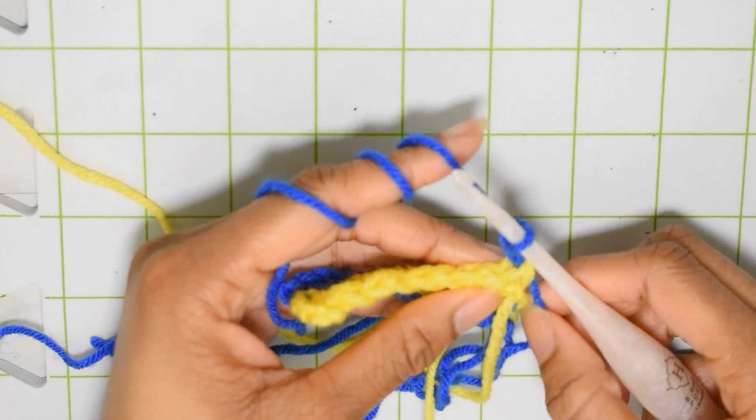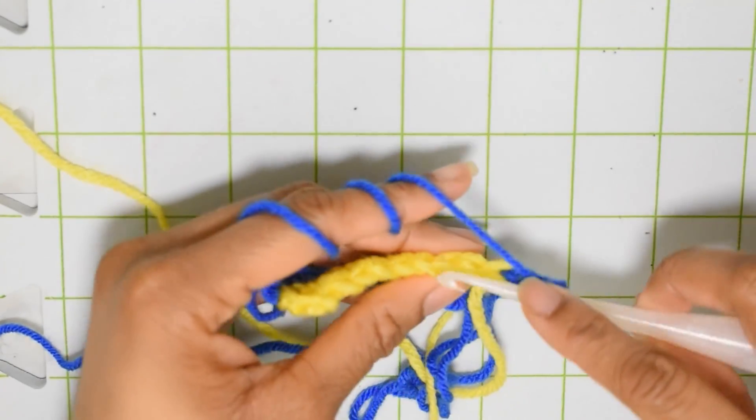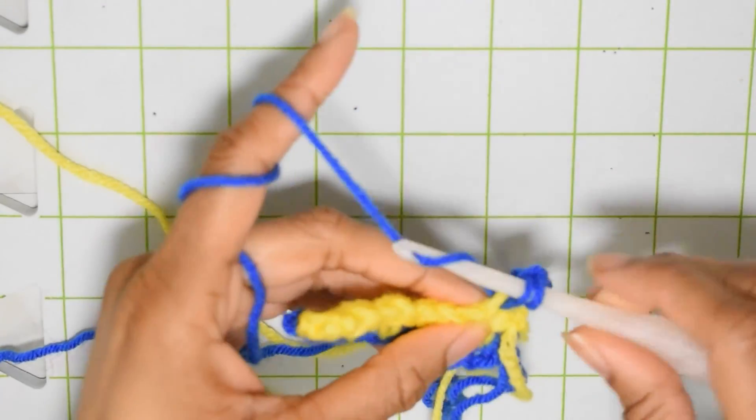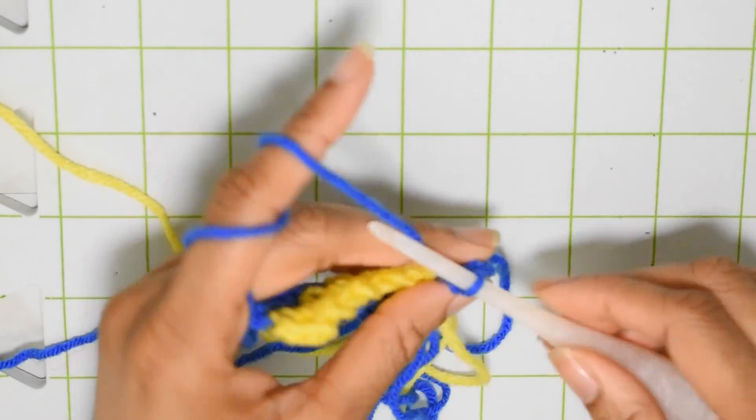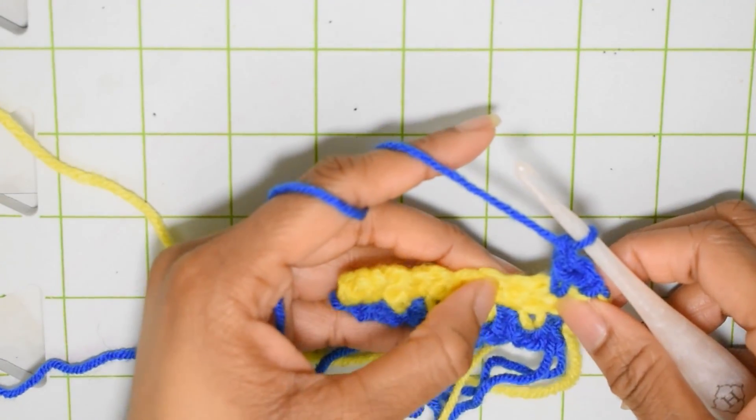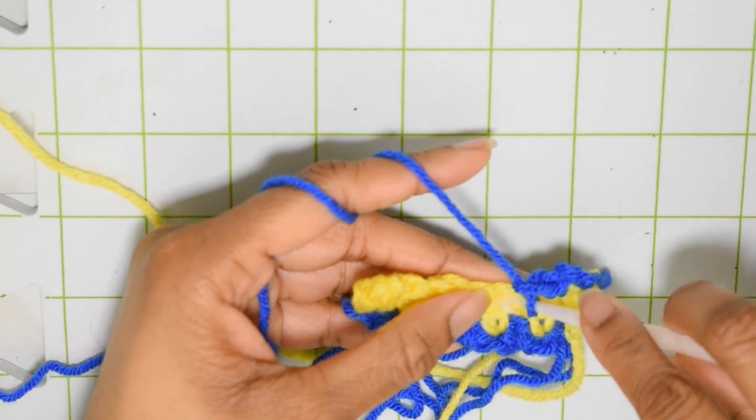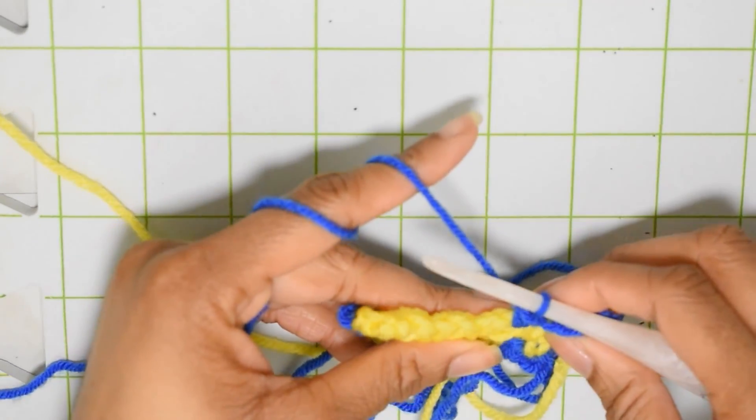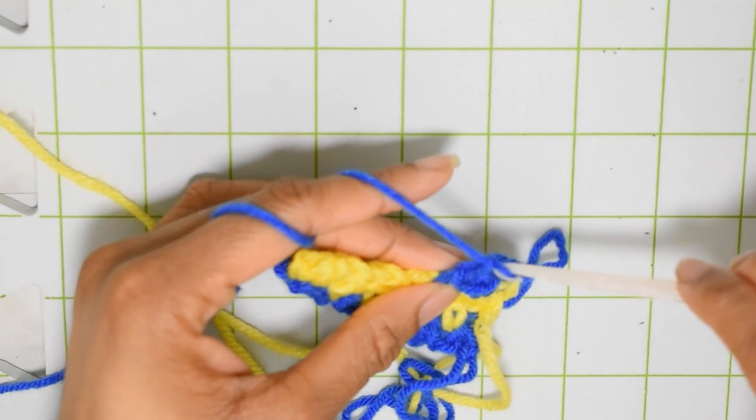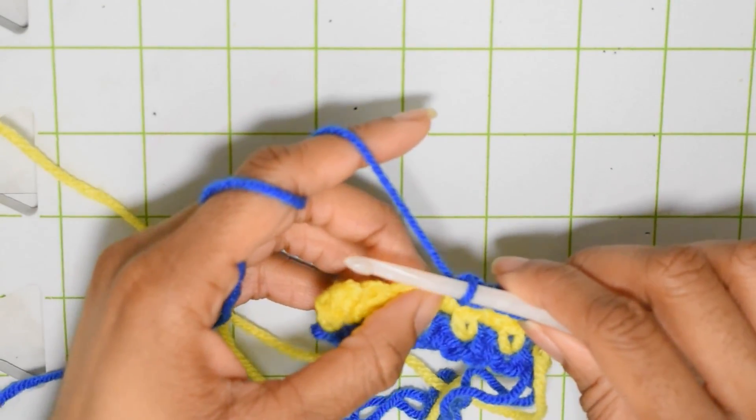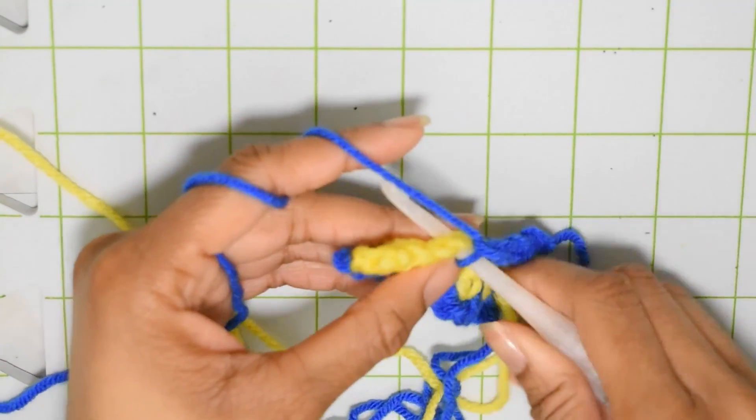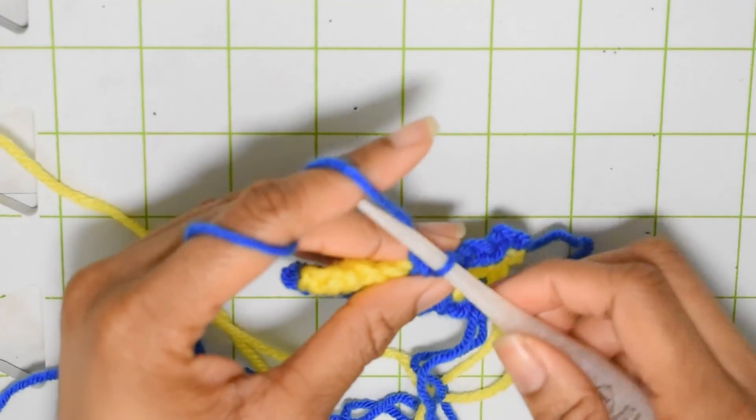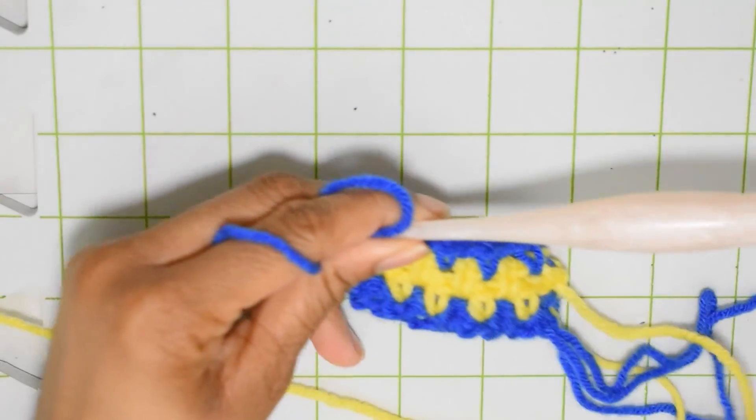And I'm going to repeat the pattern from the previous row: single crochet in the chain space, chain one, skip the next stitch and work into the next chain space available. Single crochet, I'm going to chain one, skip the next stitch, single crochet into the next stitch. All right.